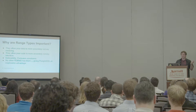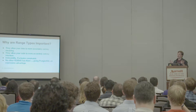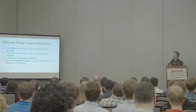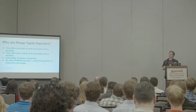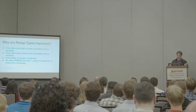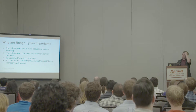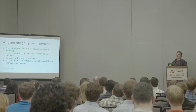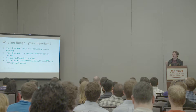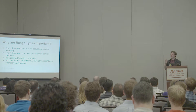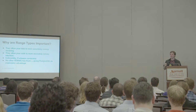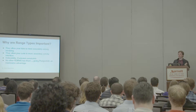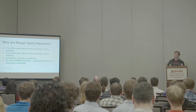I like ranges. They allow you to indicate in the data that two different values are connected — start time, end time; beginning of your hotel stay, end of your hotel stay. If those things are a range, there is no doubt about the intention of the data. Likewise, when writing statements that use ranges, you're allowed to use operators that more accurately convey your meaning — like: do these two hotel stays overlap?